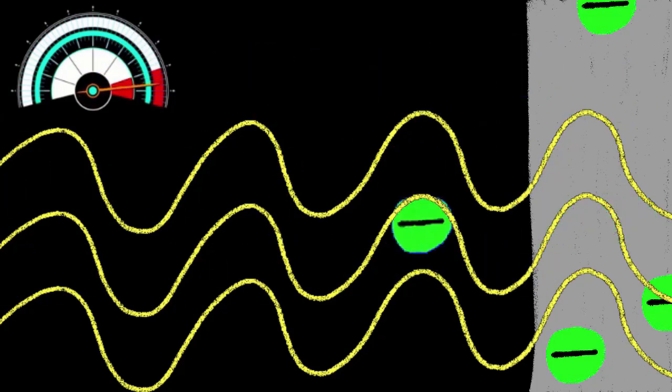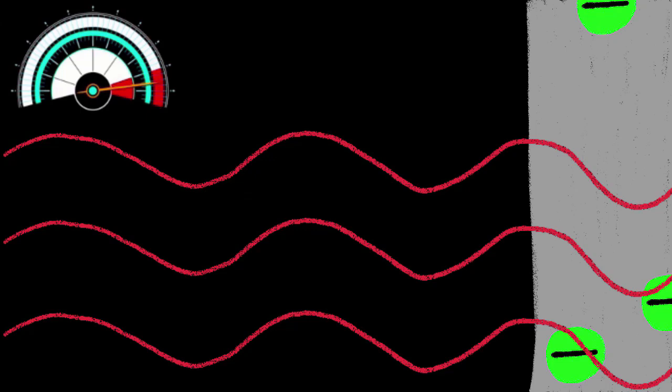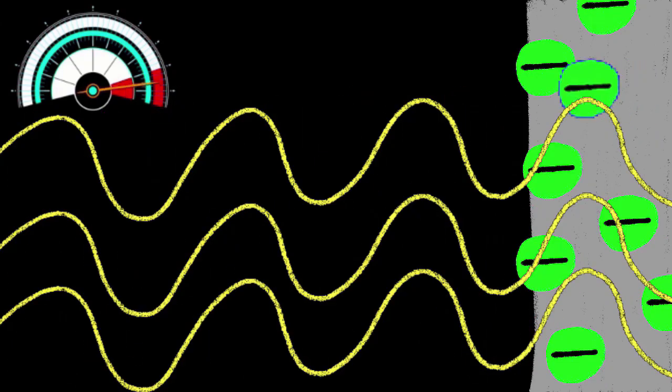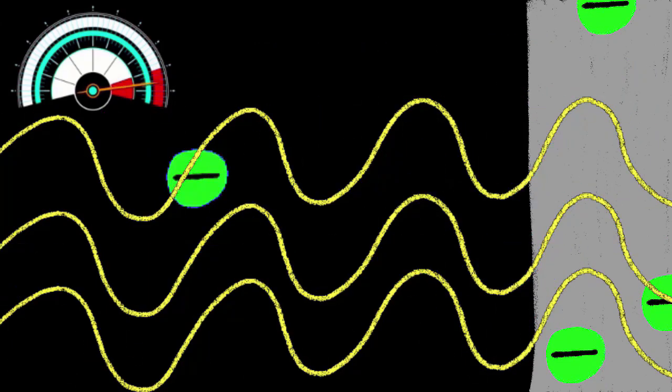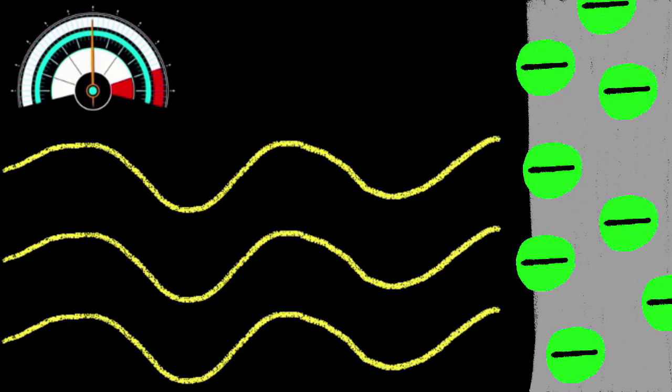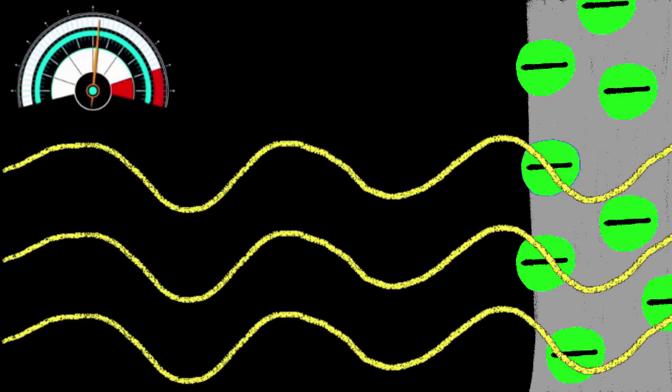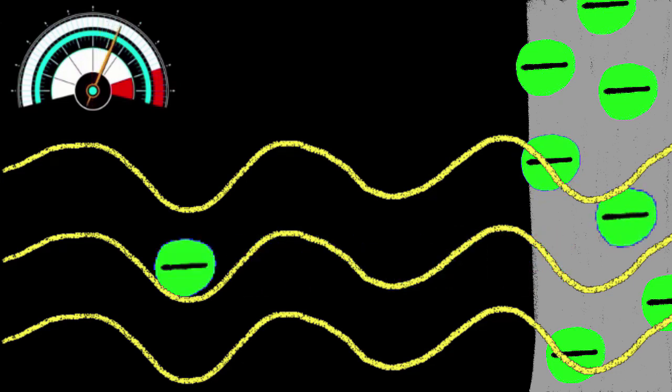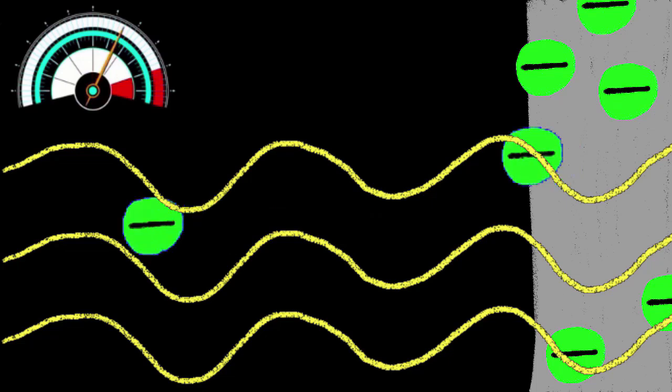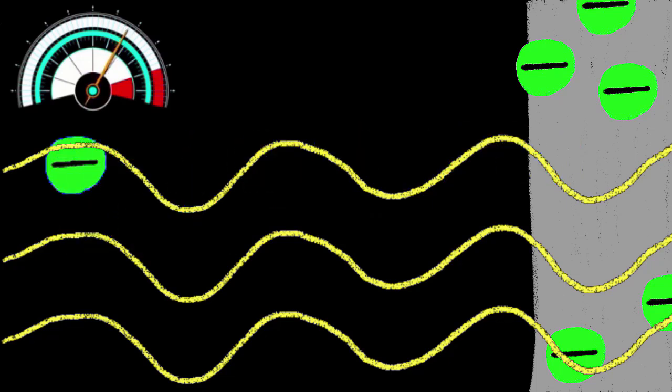So if we turn up the intensity, regardless of the frequency of the light, the electron should be given enough energy to break free. Also, if light were a wave, this energy transfer should be somewhat gradual. So there should be a time delay between when the light hits the electron and when the electron is ejected, especially at low frequencies.